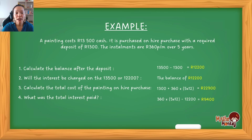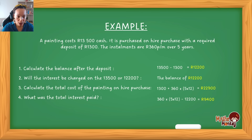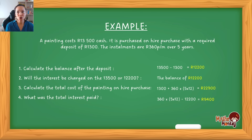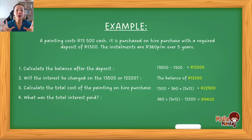If this confuses you, rewind and work through this example again, then work through the previous example. Try to answer the questions in the video before the answers appear, to see if you can calculate what's needed yourself. That is essentially how hire purchase works. Remember: hire purchase only works with simple interest, and depending on where in the process they ask a question, that determines where you stop doing your calculation.